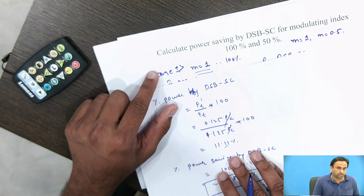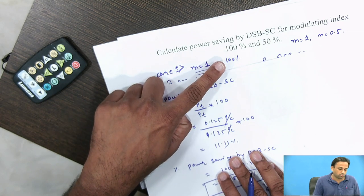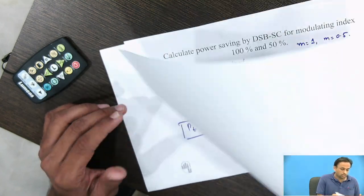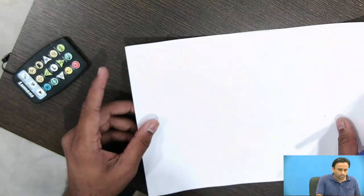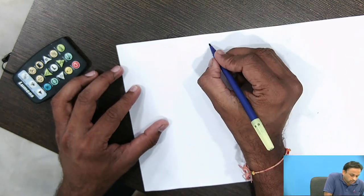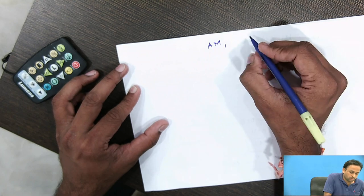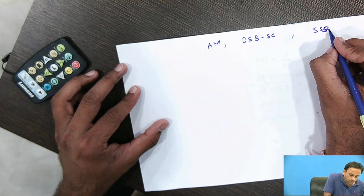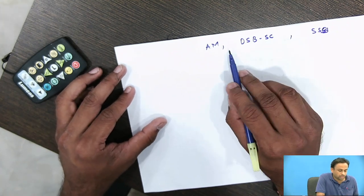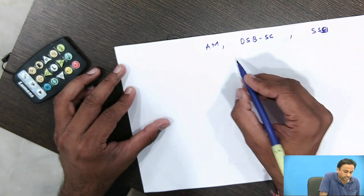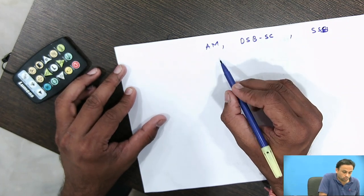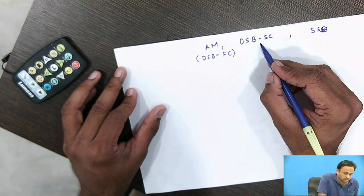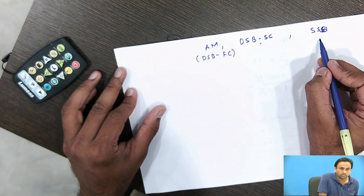This completes the example of calculating power saving by DSB-SC for modulating index 100% and 50%. Now we will revise and compare AM (also known as DSB-FC — full carrier), DSB-SC (suppressed carrier), and SSB, as we have now studied all three types of amplitude modulation techniques.